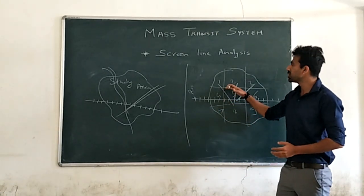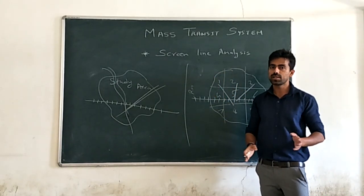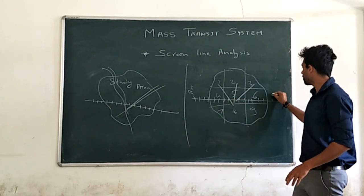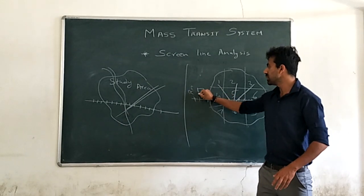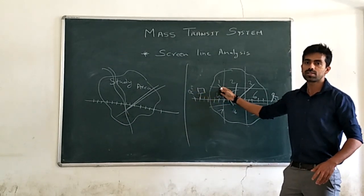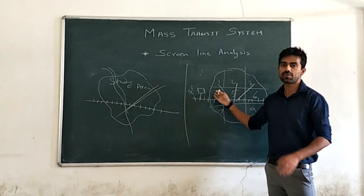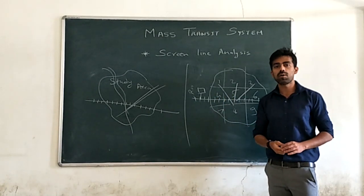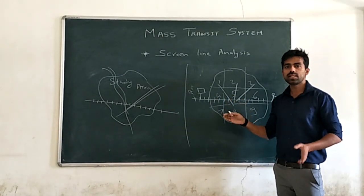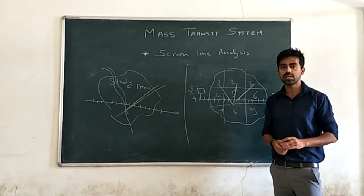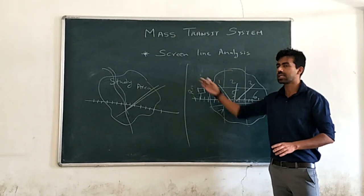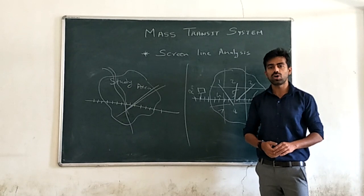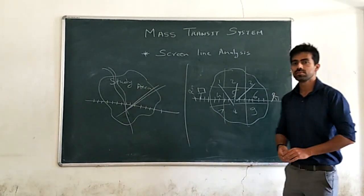You can cross-check the data which you have calculated from the home interview survey in traffic assignment with the actual traffic running on the road, by setting up a surveyor or any mechanical instrument that will record the traffic data. This data will cross-check with your home interview data — the numbers of traffic volume. So, screen line analysis is the comparison of the actual data on the road and the data calculated from the home interview survey. The process is known as screen line analysis, and we can conclude that screen line analysis is a calibration of traffic assignment through a model. Thank you.